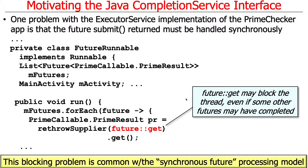The problem is that sometimes futures end up completing in different orders than they were initiated. For example, if you're going to compute n numbers to see if they're prime or not, if a number is a prime number, that computation takes a heck of a lot longer to compute, typically, than if the number is not a prime number. Because if it's an even number, you can almost instantly figure out it's divisible by two. But if it's a prime number, it's going to take a long time to run.